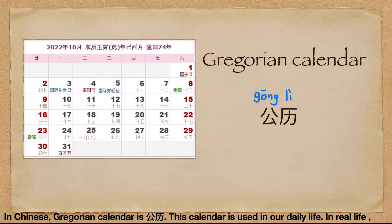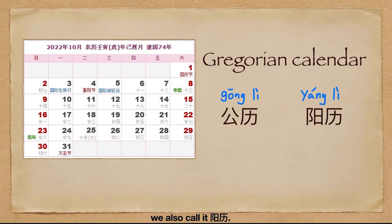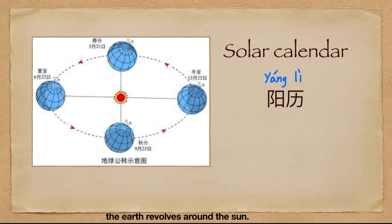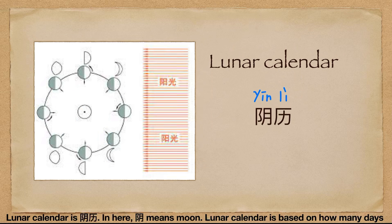In Chinese, the Gregorian calendar is 公历. This calendar is used in our daily life. In real life, we also call it 阳历. Solar calendar is 阳历 — 阳 means sun. The solar calendar is based on how many days the earth revolves around the sun.